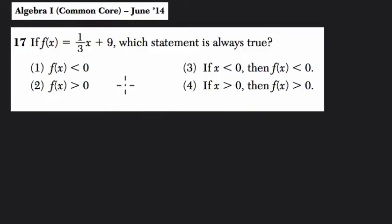Hello and welcome. Before you watch this video, pause it and try the problem on your own. In this problem they tell us that f(x), that's function notation, means an output called f based on an input x. The input-output relationship follows this rule: a third of x plus 9. They're asking us which of the following statements is always true.